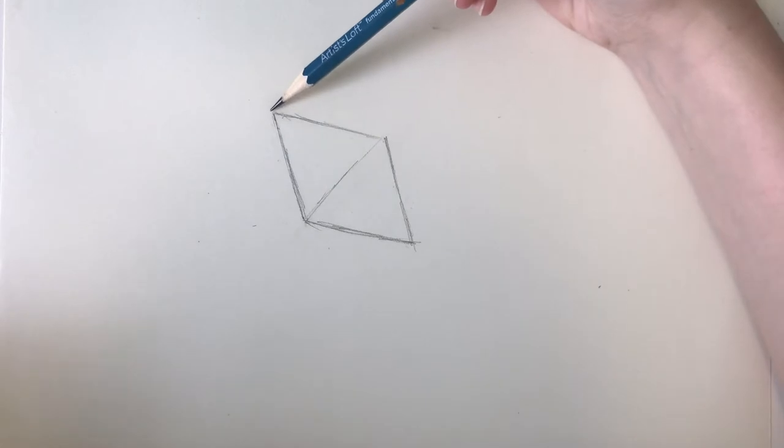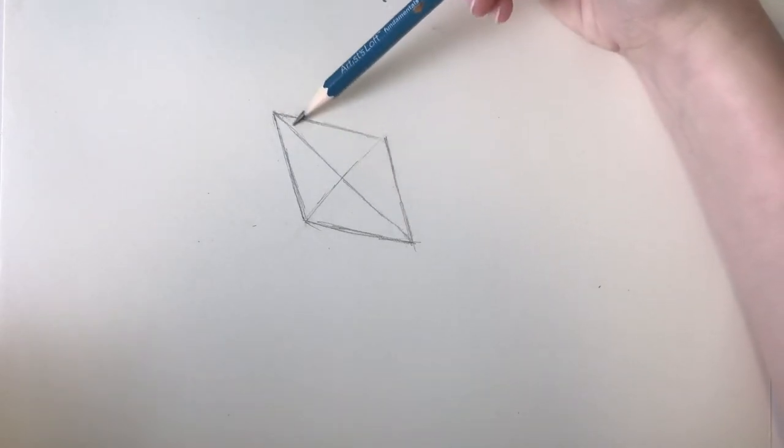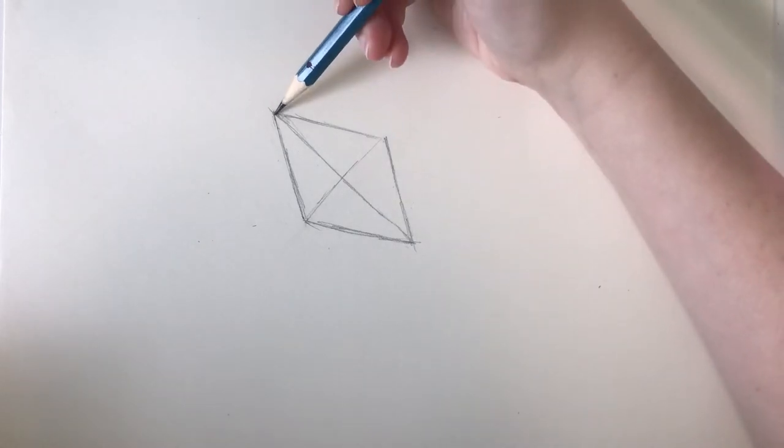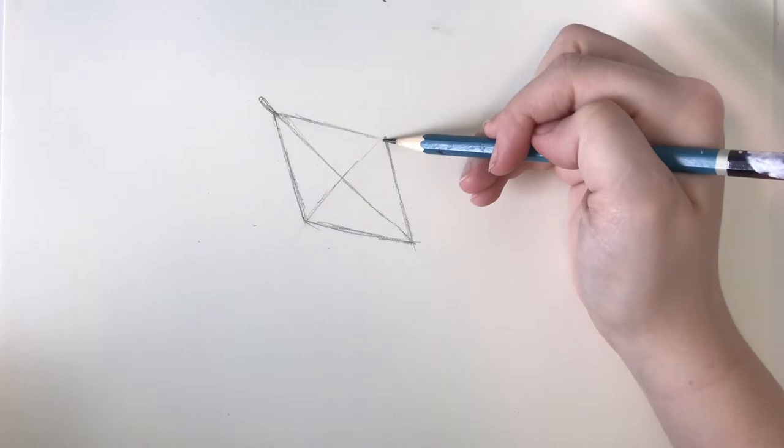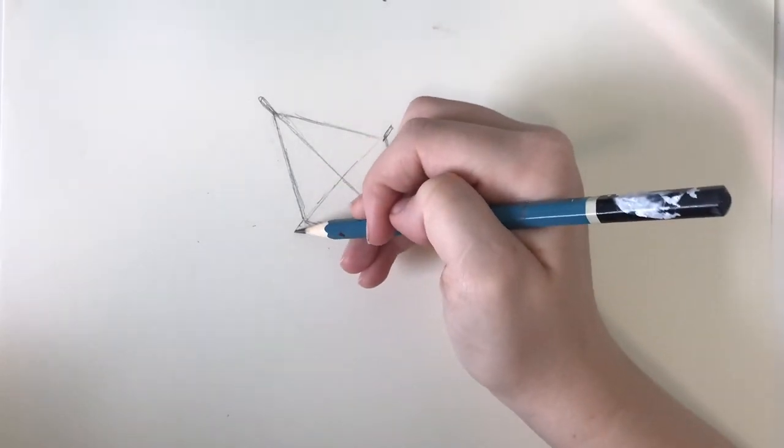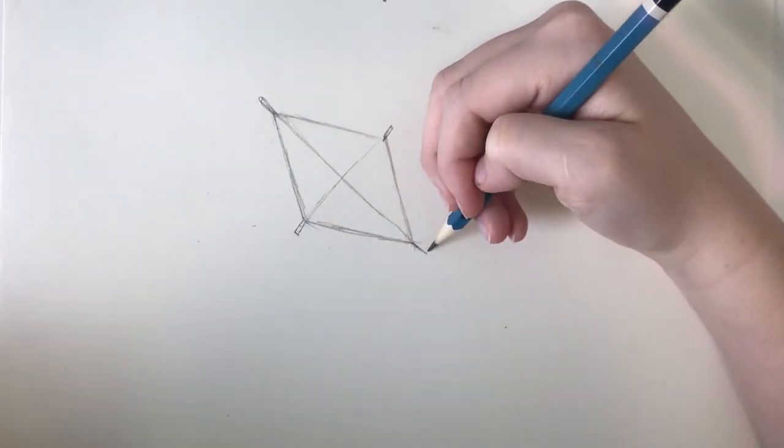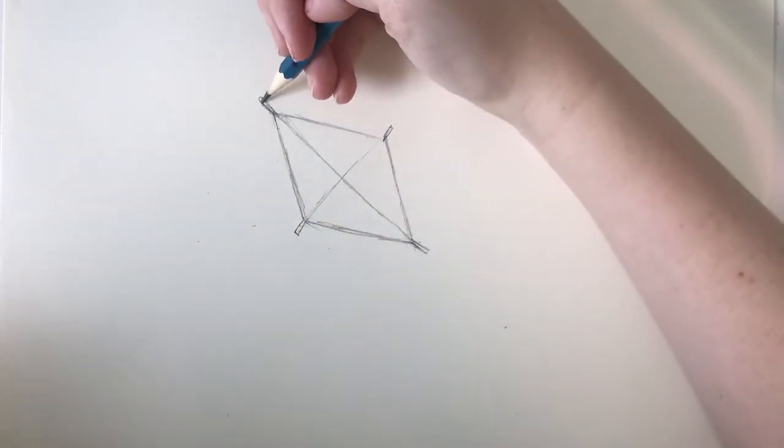Now we're going to draw a line down the center like this. I'm going to extend each of these out with a small rectangley shape. So there we go.